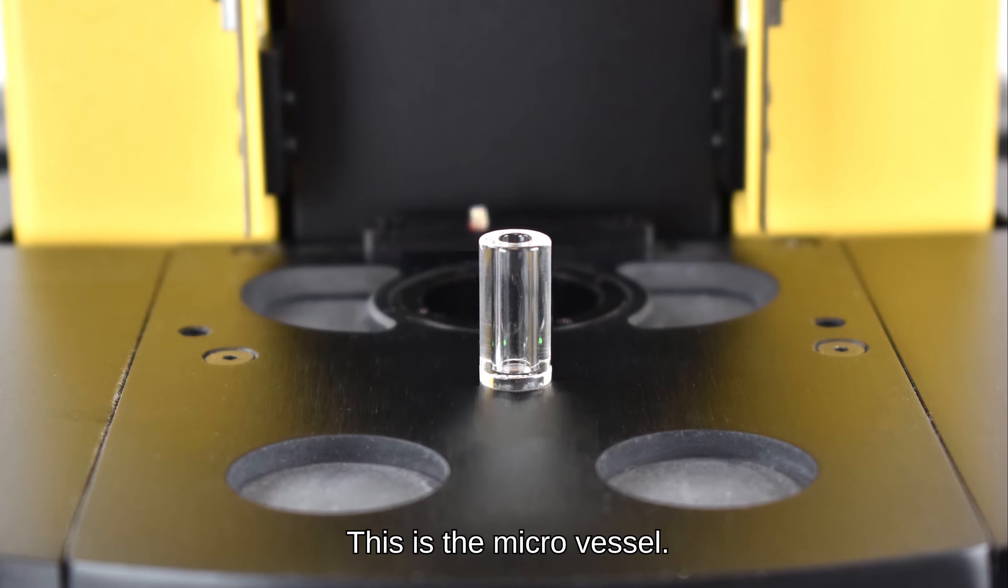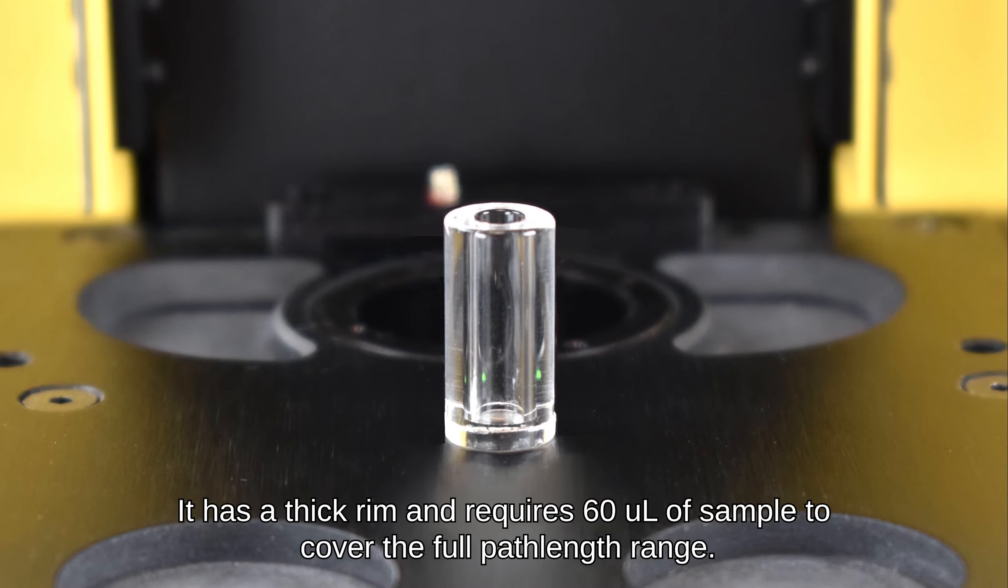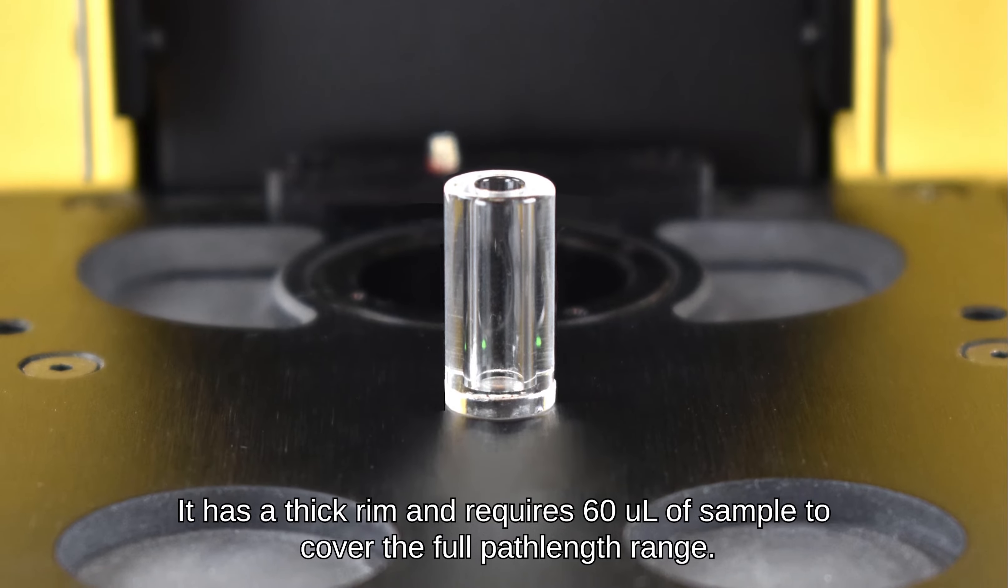This is the micro vessel. It has a thick rim and requires 60 microliters of sample to cover the full path length range.